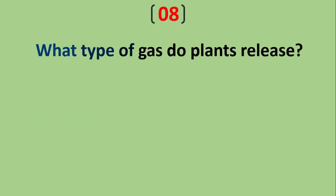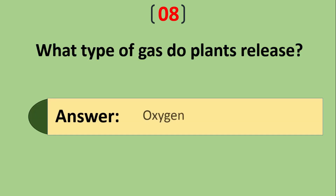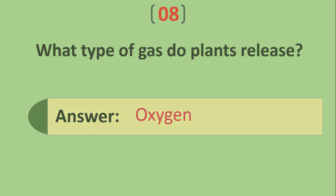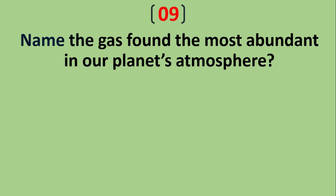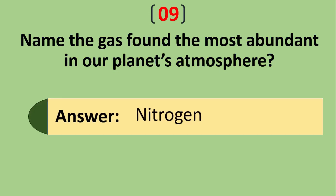What type of gas do plants release? Oxygen. Name the gas found most abundant in our planet's atmosphere. Nitrogen.